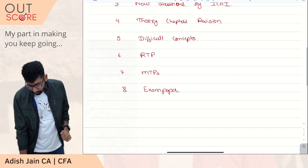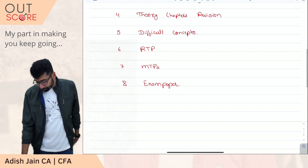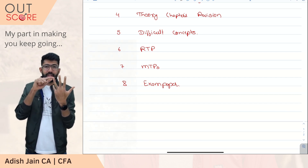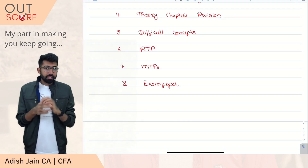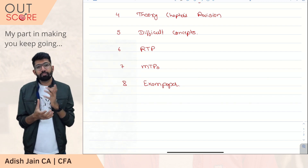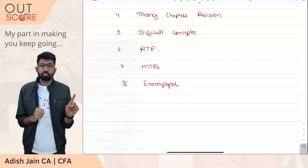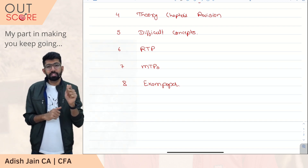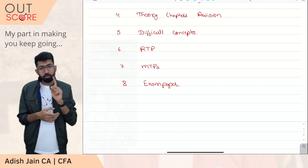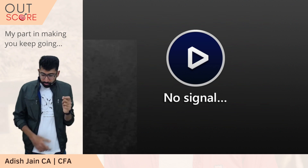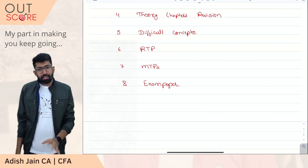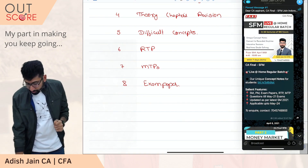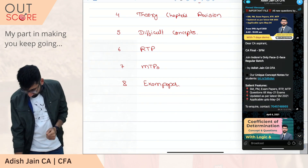Talking about the theory chapter revision — there are five most important theory chapters: startup finance, securitization, risk management, security analysis, and corporate strategy and financial policy. These five topics are the primary ones from a theory perspective. I'm going to come up with a revision video for each, where I'll explain the concepts — not just read them out — but keep it as concise as possible. This will happen on YouTube. I'll also share theory notes — let me find them on the Telegram channel.